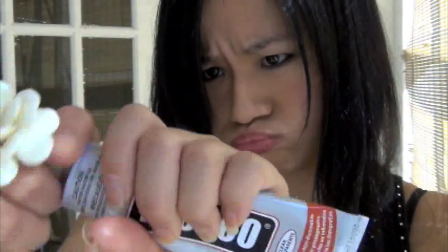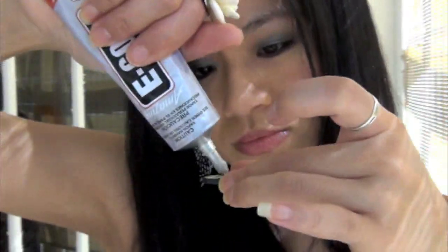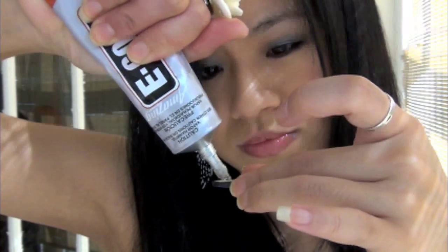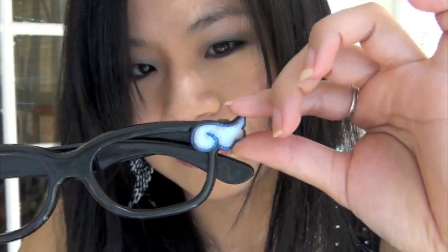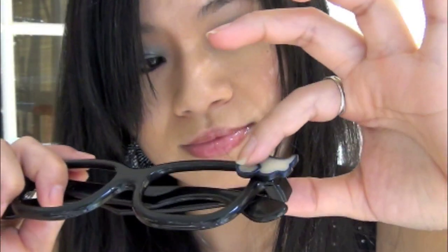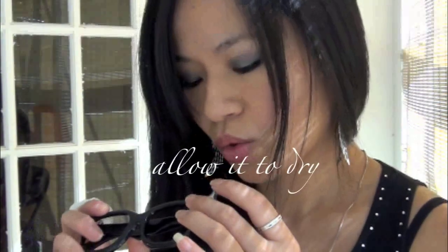And of course, if you don't have this E6000, you can use regular glue as well. But just be careful. Don't throw them around too much because the glues are very weak. You can also use hot glue gun. But I would not suggest super glue because super glue tends to give off white streaks when it's completely dry.